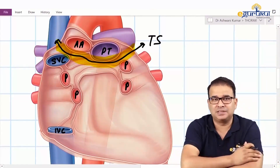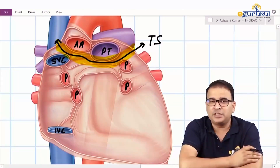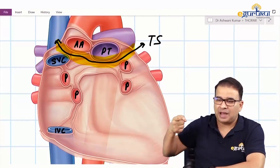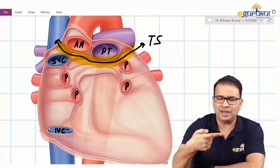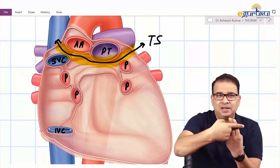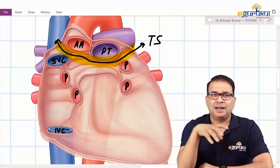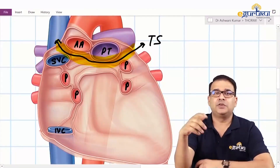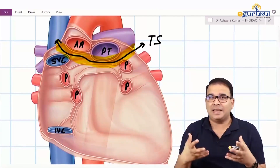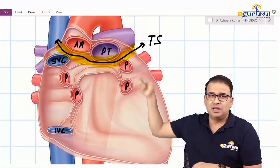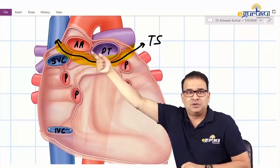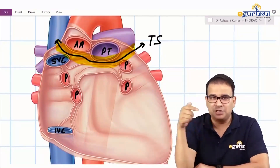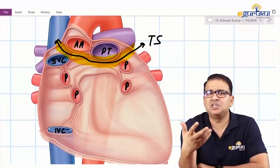This sinus is called the transverse sinus. The advantage of the transverse sinus is that it is through — in your first year practical, you can put a finger behind the ascending aorta and pulmonary trunk and see it appearing from the other side. Because it is through, it can be used surgically for the ligation of great vessels in cardiac surgery — you can pass a ligature through the transverse sinus to ligate the ascending aorta and pulmonary trunk.